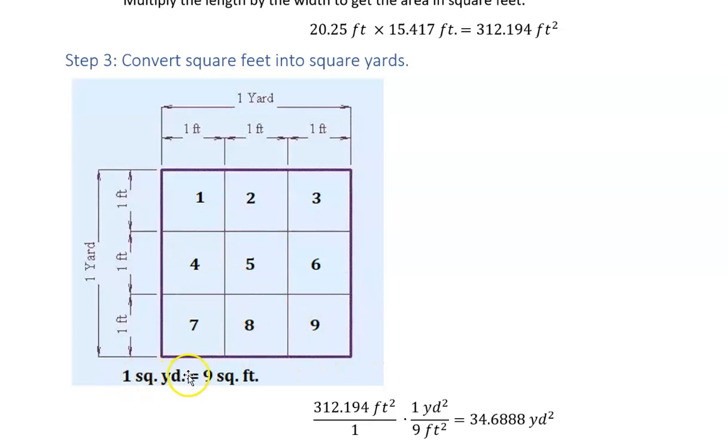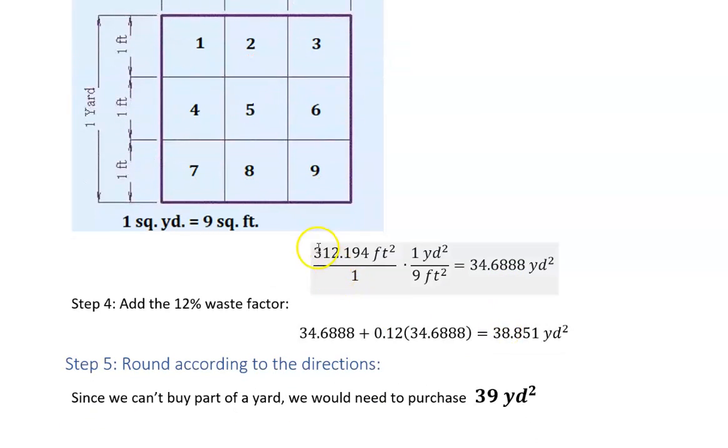If you were to cut that up in a three by three, you could see that there would be nine different boxes in there. That tells us that one square yard has nine square feet in it. So to make that conversion, I would take my area that I found in the last part and multiply by this dimensional analysis of one square yard equals nine square feet.